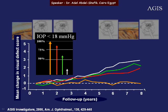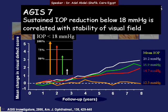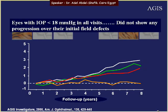In Group A, where IOP was below 18 at 100% of visits, the visual field appeared stable. In Group D, field changes were high. The AGIS showed that sustained IOP reduction below 18 is correlated with stability of the visual field. Eyes with IOP below 18 in all visits did not show any progression on average over their initial field defects, though this reflects mean data, not individual cases.